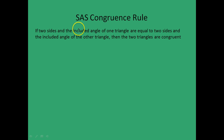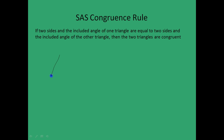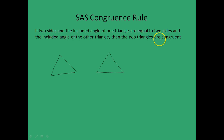The first criteria for congruence is the SAS congruence rule. It is stated as: if two sides and the included angle of one triangle are equal to two sides and the included angle of the other triangle, then the two triangles are congruent. Let's see what this means by looking at two figures. Consider two triangles. If this side is equal to this side and this side is equal to this side, and the included angles respectively are also equal, then these two triangles are congruent.